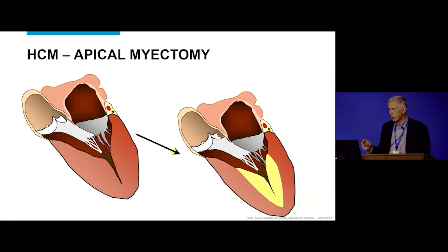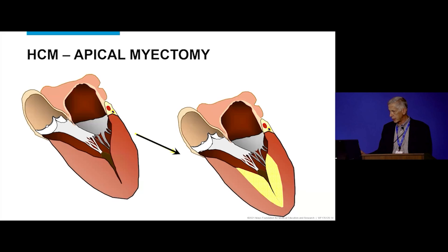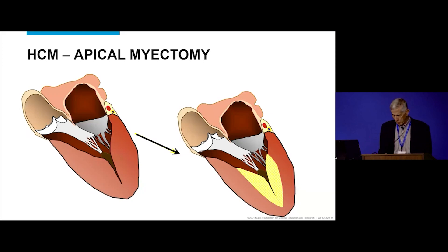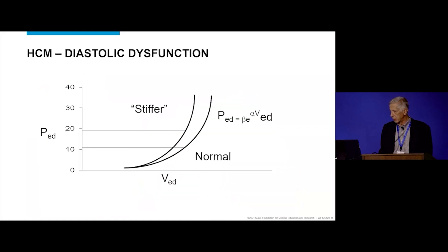We discussed the possibility of enlarging the ventricle — a pretty simple concept: if the ventricle is too small and you have heart failure, will enlarging it improve symptoms? We thought about doing apical myectomies or going through the apex to perform an extensive septal myectomy to enlarge the ventricle.